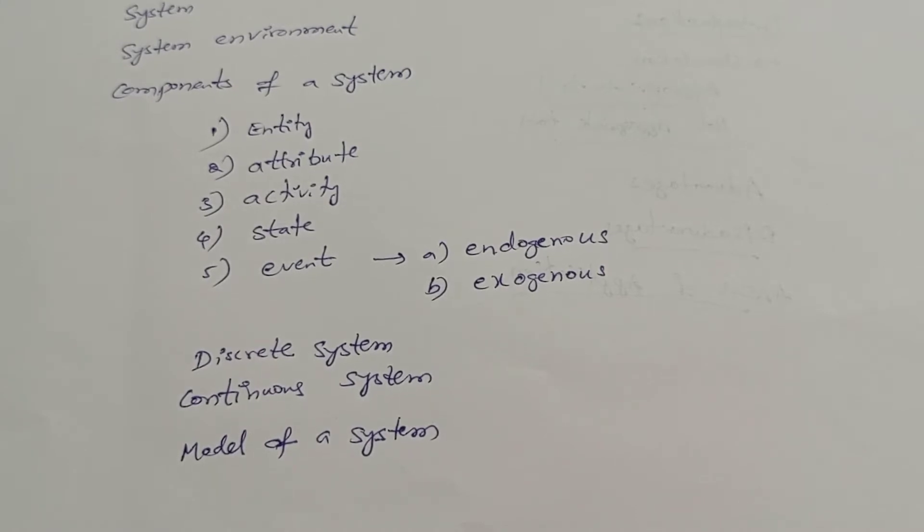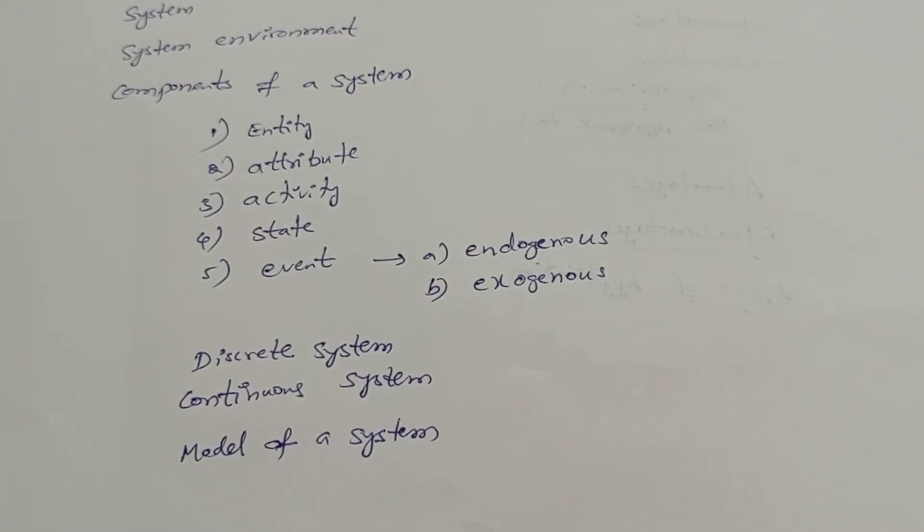That is a state variable. Take the example of a bank teller state variable: the number of customers in a bank. For example, from 10 to 11, how many customers are we observing? Next, 11 to 12, and so on. When you observe,